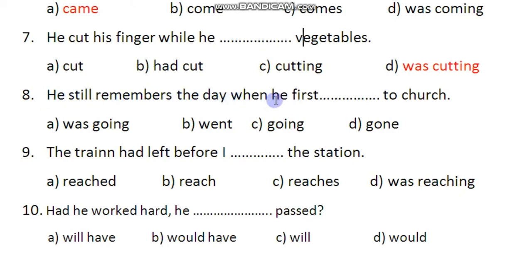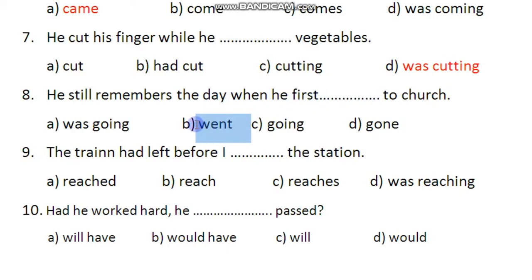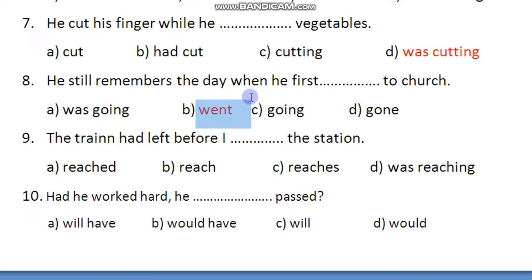Eighth one: He still remembers the day when he dash first to church. 'Still remembers' is present tense. When he first went to church — the right option is 'went,' the second form of 'go,' not 'gone.' So: he still remembers the day when he first went to church.